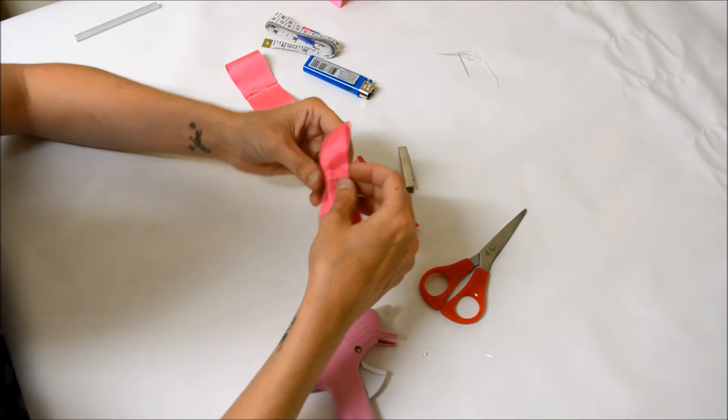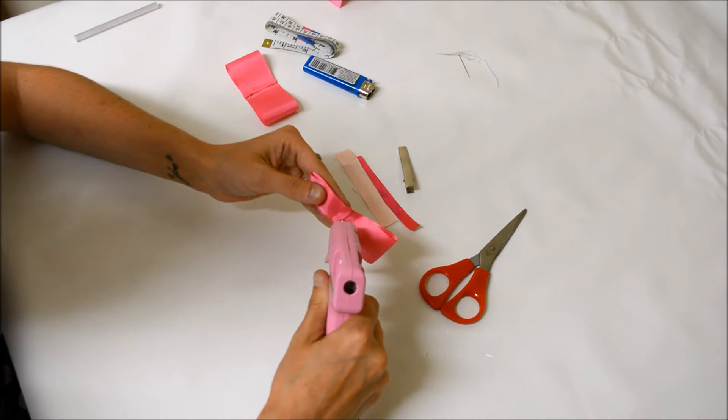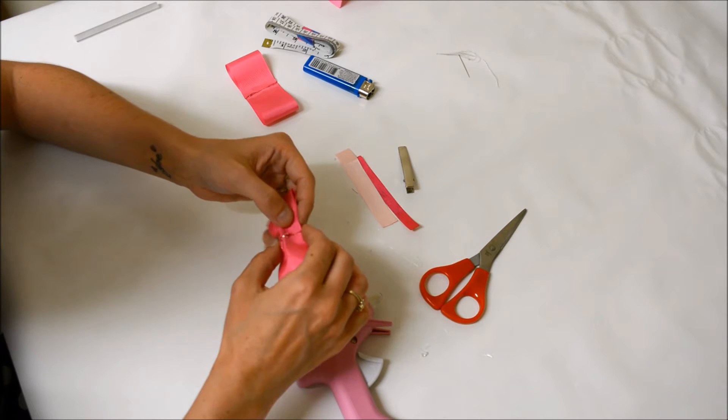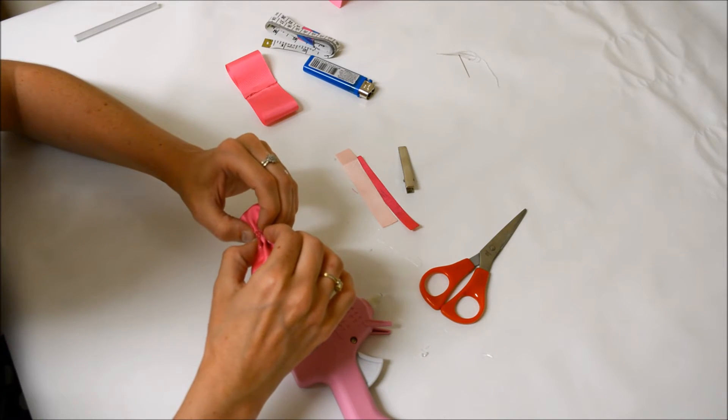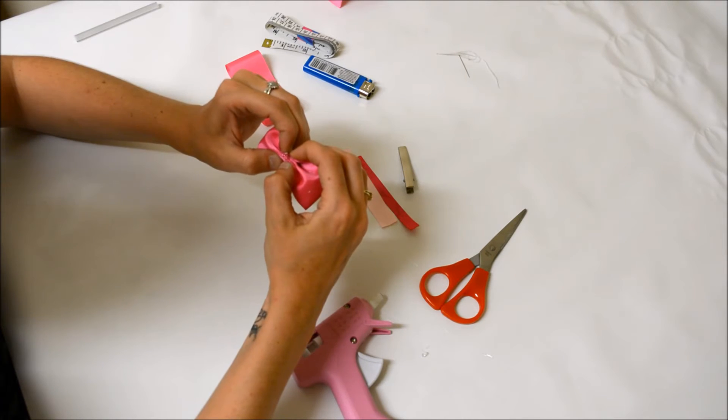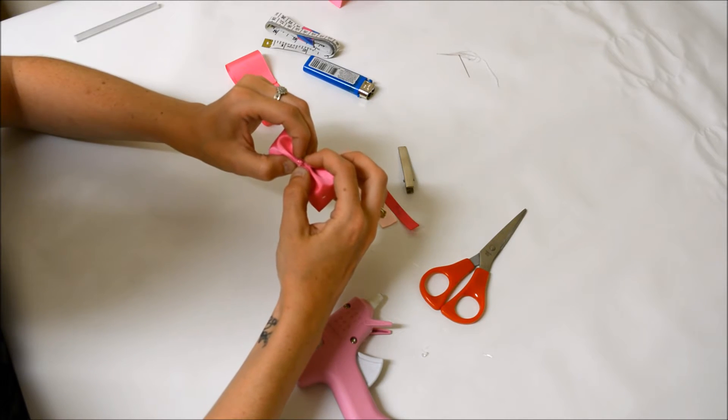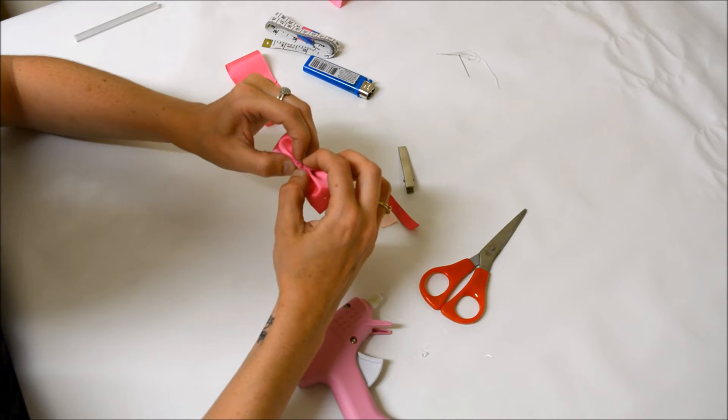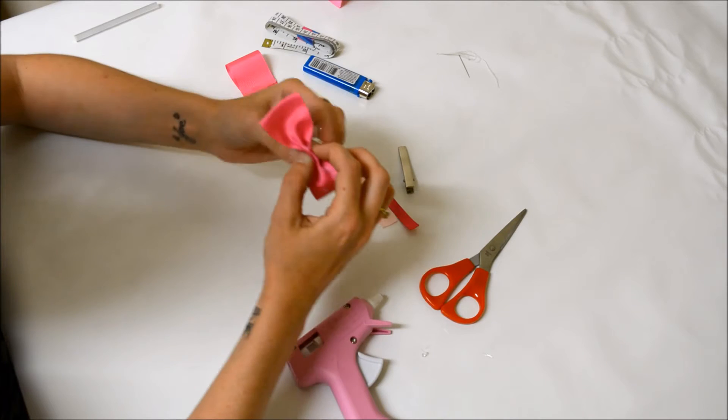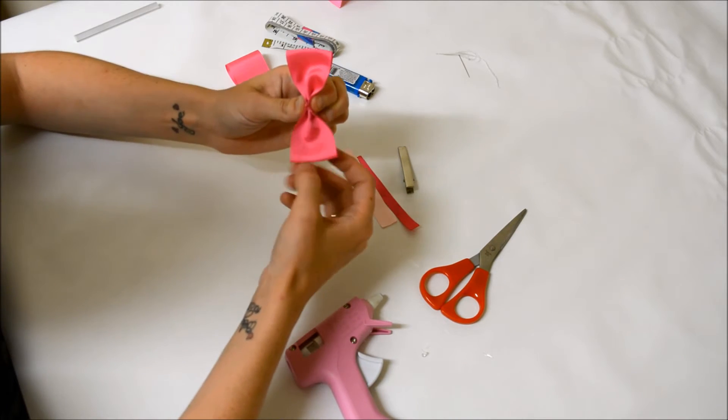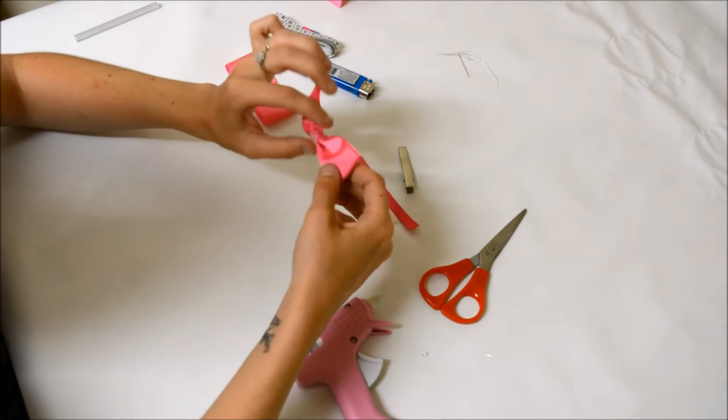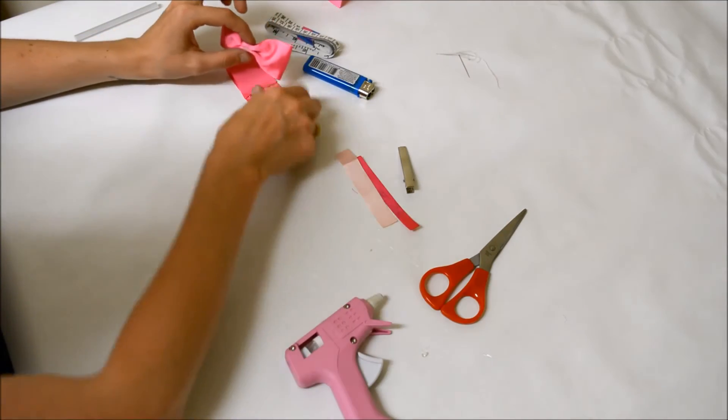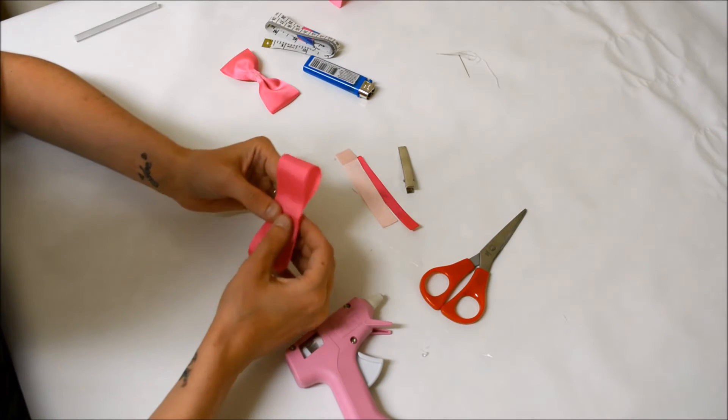Now you want to turn it over and do the same for the other side. A little blob of glue. Fold it back and hold in place. Now once that glue is dried you want to place that ribbon to one side and do exactly the same with your second ribbon.